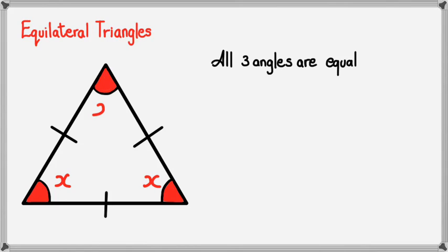Because they're all the same, we've got x on all three corners of the triangle. Now what we're going to do is use the sum of angles in a triangle to actually prove what x is equal to.